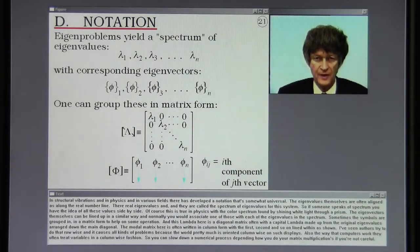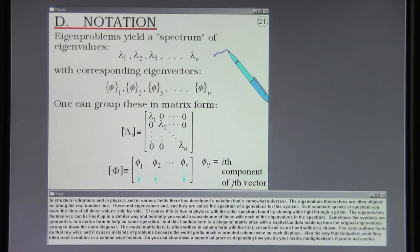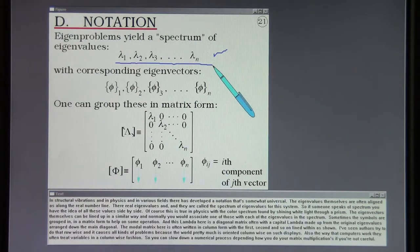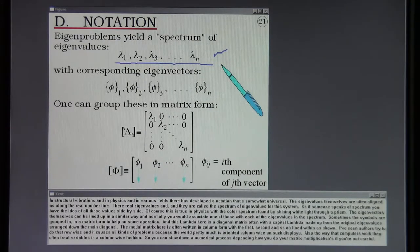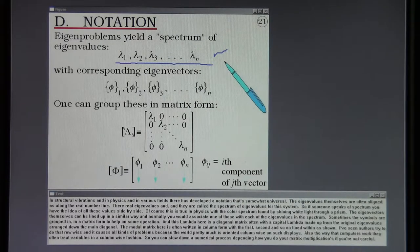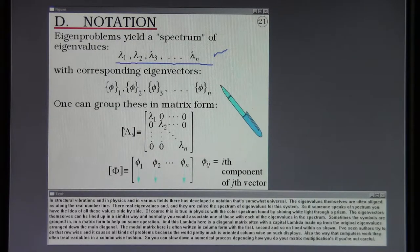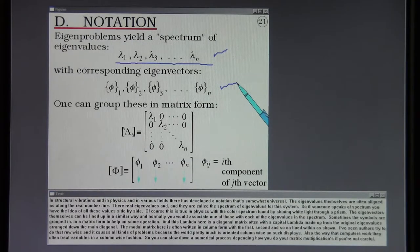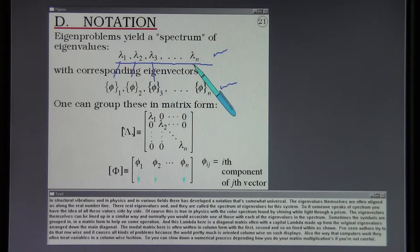In structural vibrations and in physics, in various fields there has developed a notation that's somewhat universal. The eigenvalues themselves are often aligned along the real number line if they're real eigenvalues. They are called the spectrum of eigenvalues for the system. If someone speaks of spectrum, you have the idea of all these eigenvalues side by side. Of course, this is true in physics with the color spectrum found by shining white light through a prism. The eigenvectors themselves can be lined up in a similar way. Normally you would associate one of those with each of the eigenvalues in the spectrum.